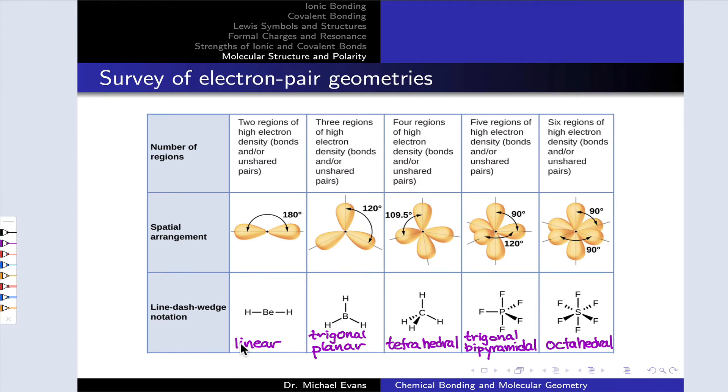First, we're going to survey the possible electron pair geometries. In this table, we have as the first row the number of regions, or what we would call the steric number, associated with the central atom in the structure. This we'll be able to infer from the Lewis structure. In more detail, it's simply the number of regions of electron density around the atom. To determine this, we count double and triple bonds as a single region, a single electron cloud, because the double and triple bond essentially represent a single contiguous region of electron density. When the central atom has two regions of electron density around it, we're looking at a linear geometry.